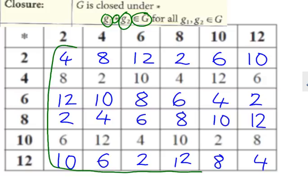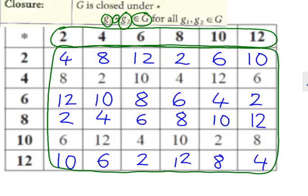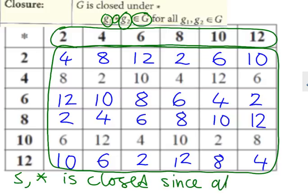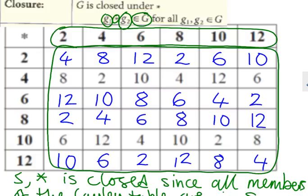If you look very closely, all these numbers, they're all elements of this set, every single one. So the easiest way to justify that this set is closed under the operation multiplication modulo 14 is to say, the S with the operation multiplication is closed since all members of the Cayley table are closed.